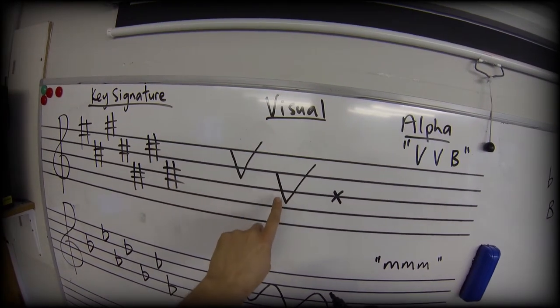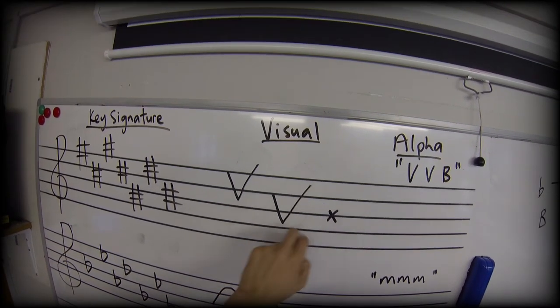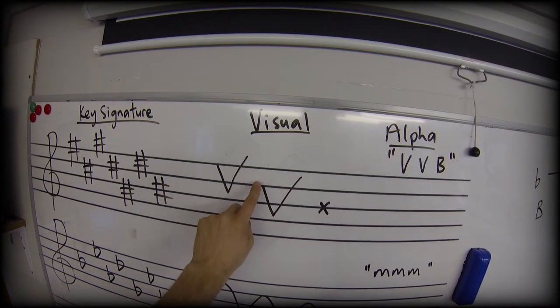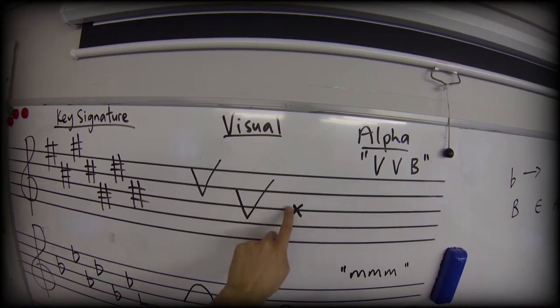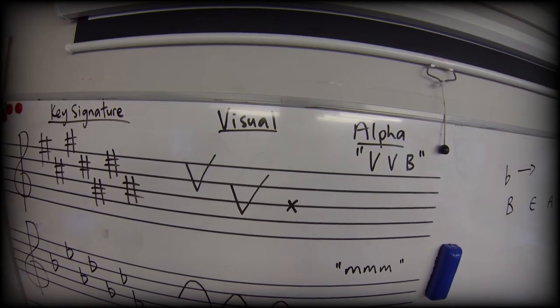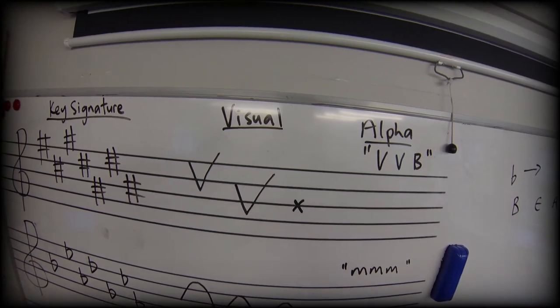And then we're going to repeat that shape starting on a D sharp. So we go D sharp, down to A sharp, up to E sharp, and that is our six sharps. And we only need to remember one right in the middle, that B sharp, where I've got x marks the spot.